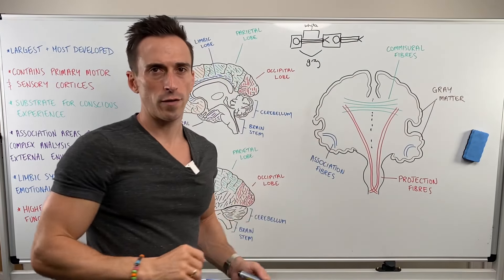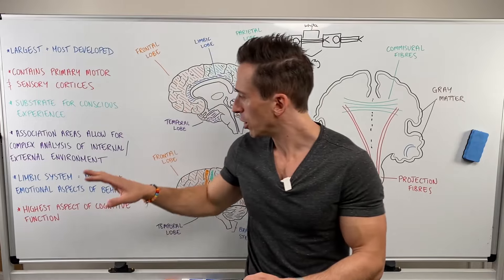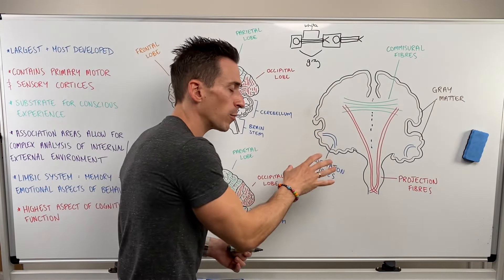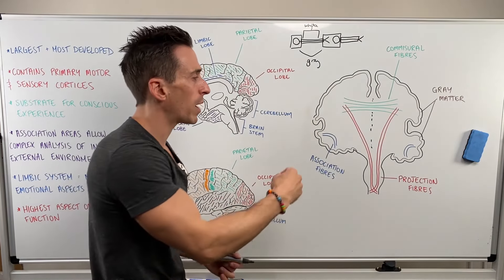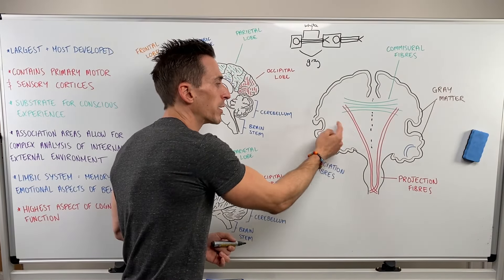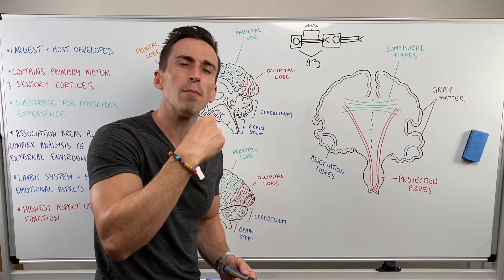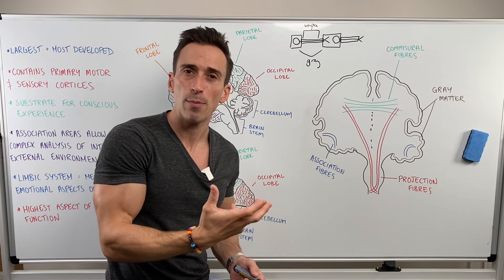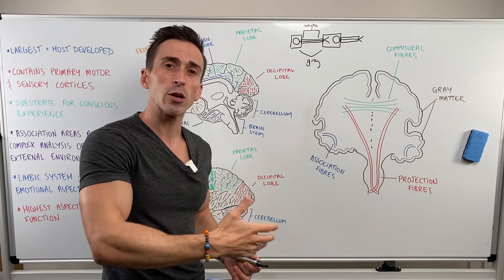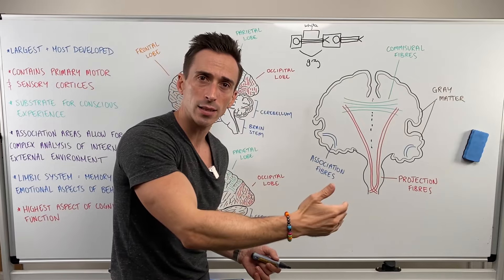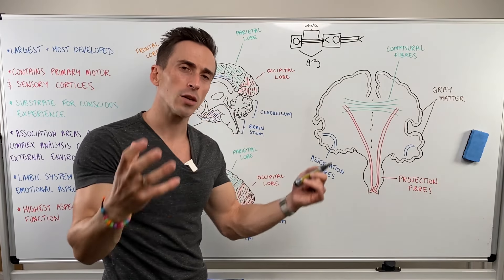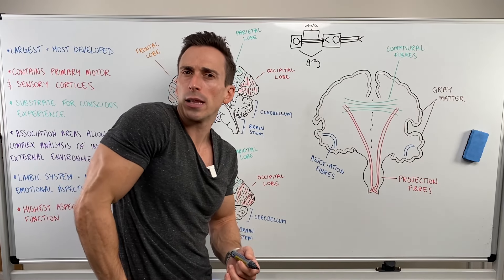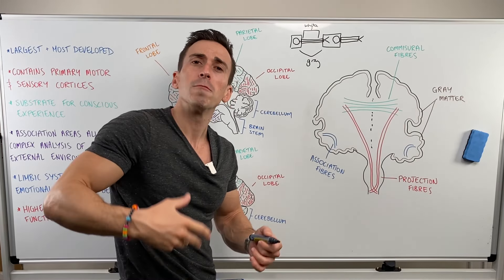Association fibers allow one part of the cortex to speak to another part of the cortex so that we can make more sense of what's happening. If I want to sequence a motor task, I need these association fibers. If I want to make sense of what I'm feeling in my pocket, again, we need these association fibers.